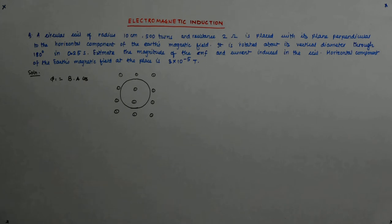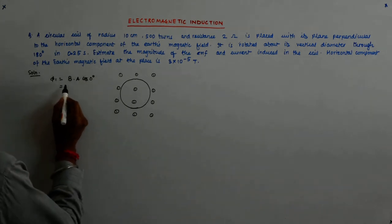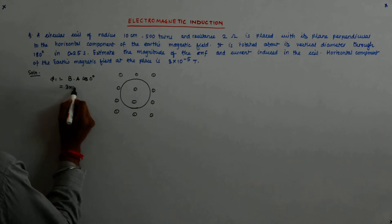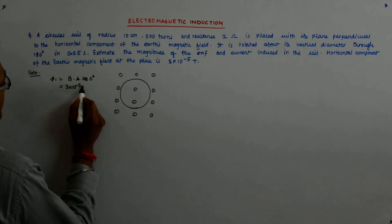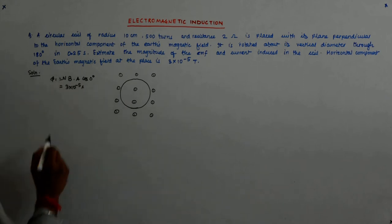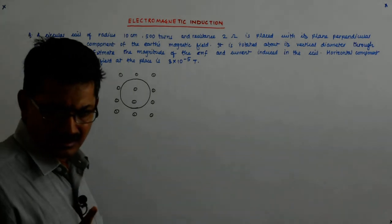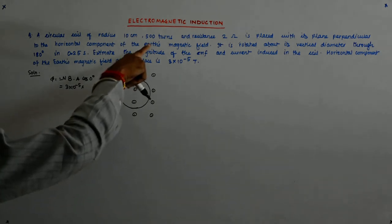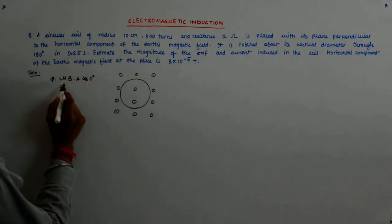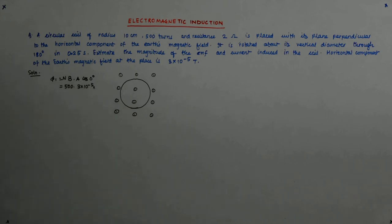So it is B into A into cos 0 degree. Now what is B? 3 × 10^-5. What is A? A is A, and you will have to write the number of turns also. This is only for one turn. The number of turns is 500, so you will have to write 500 into 3 into 10^-5 into πr².